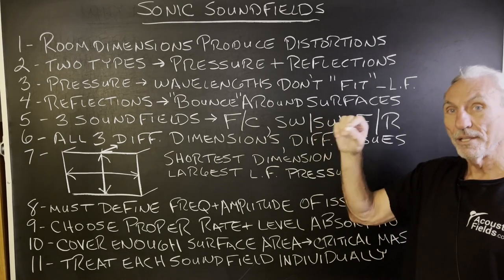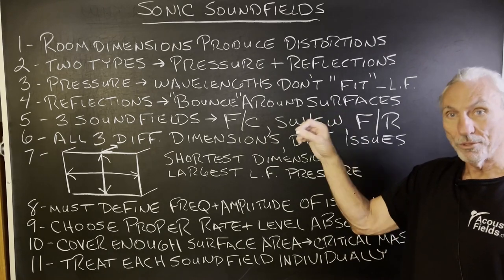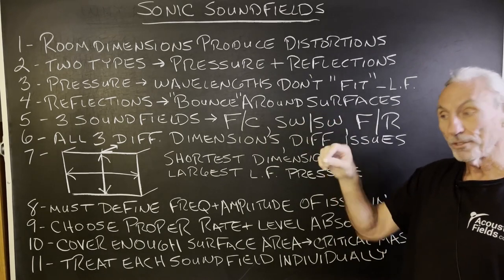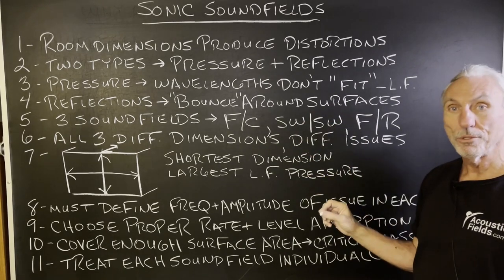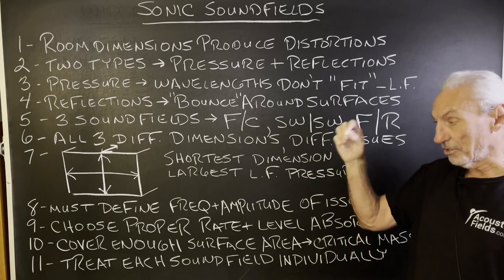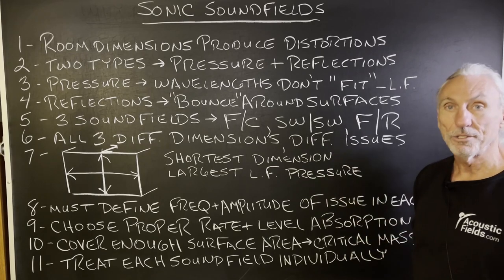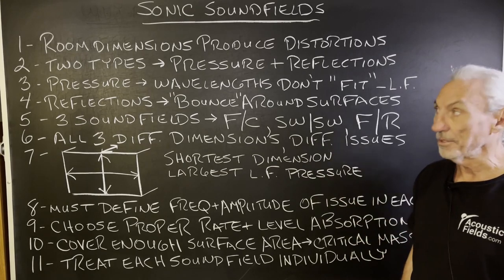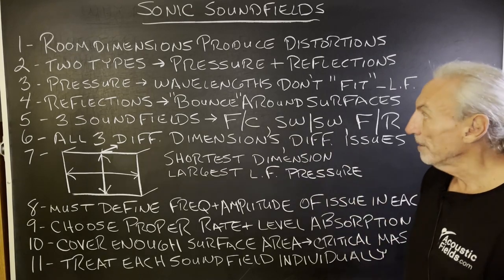If you did an outline, you have Roman numeral one: pressure. Roman numeral two: reflections. And then all the subtopics underneath.